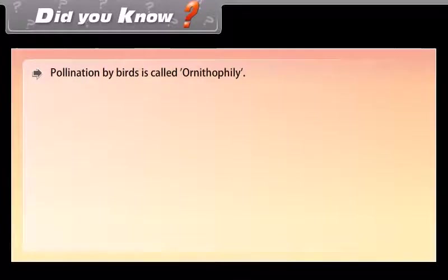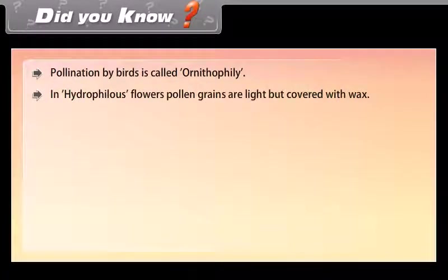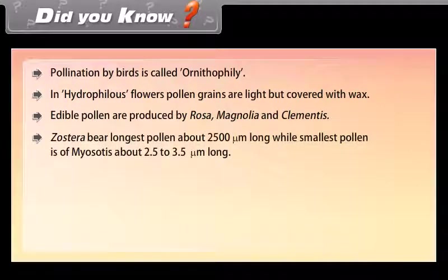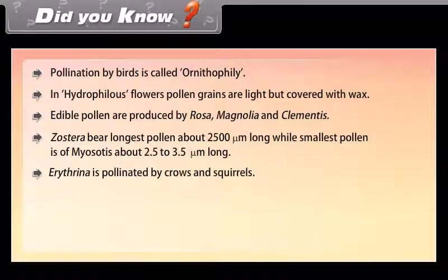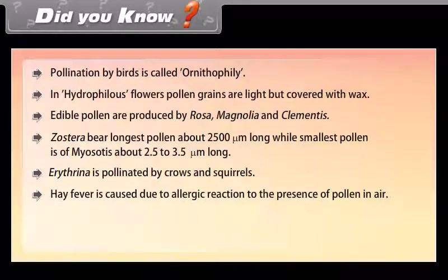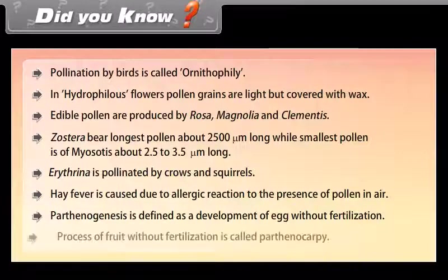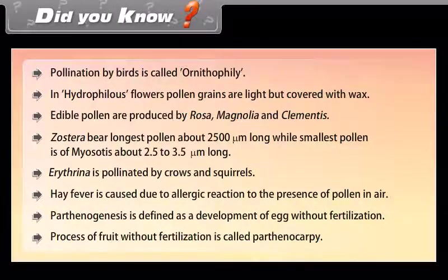Did you know? Pollination by birds is called ornithophily. In hydrophilous flowers, pollen grains are light but covered with wax. Edible pollen are produced by Rosa, Magnolia, and Clematis. Zostera bears the longest pollen, about 2500 mm long, while the smallest pollen is of Myosotis, about 2.5 to 3.5 micrometers long. Erythrina is pollinated by crows and squirrels. Hay fever is caused by an allergic reaction to the presence of pollen in air. Parthenogenesis is defined as the development of an egg without fertilization. The process of fruit formation without fertilization is called parthenocarpy.